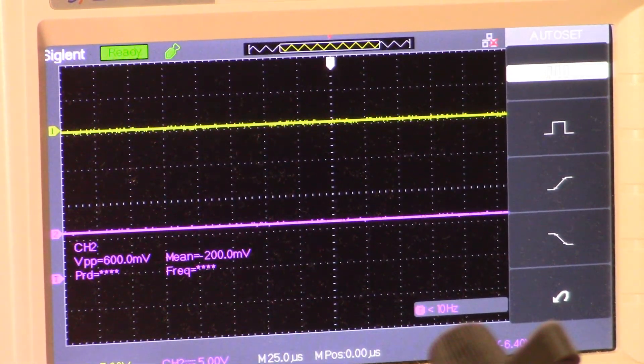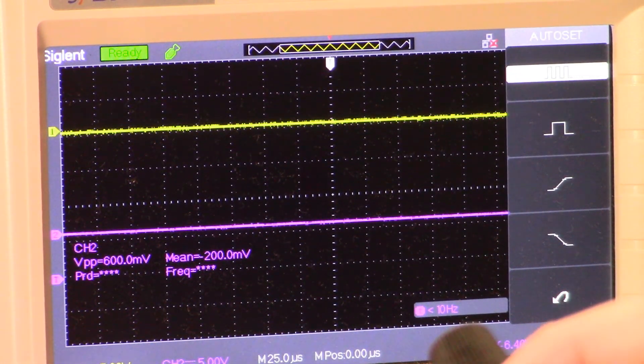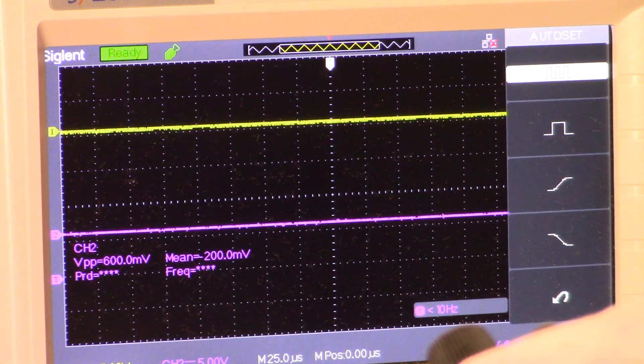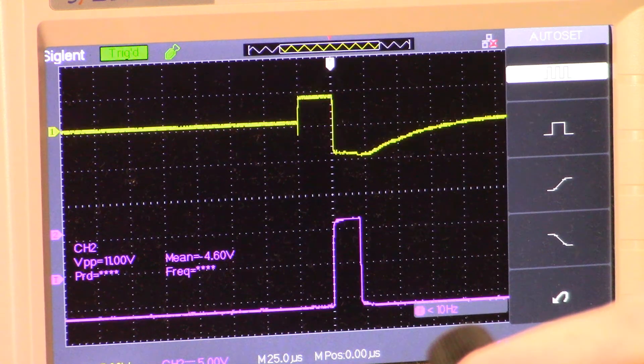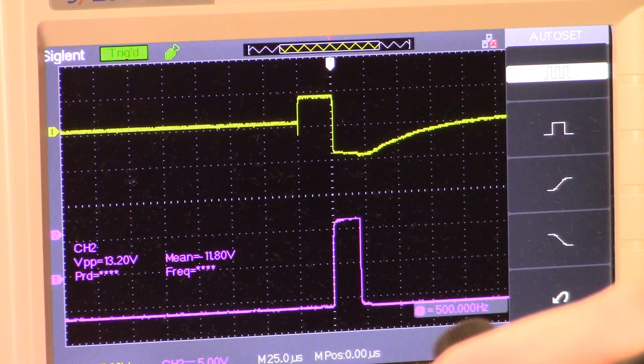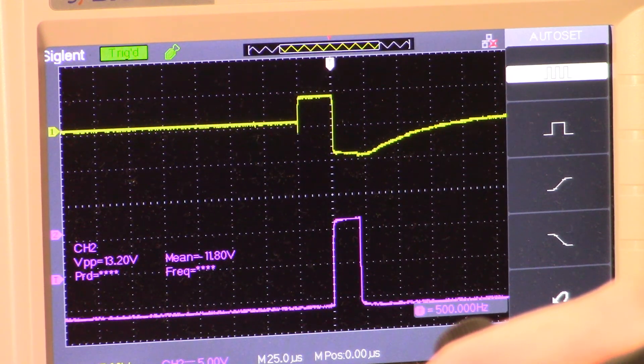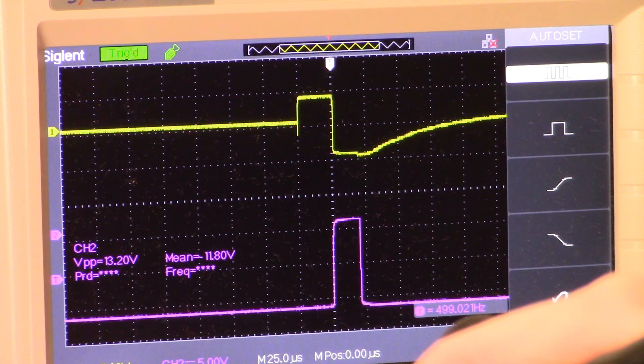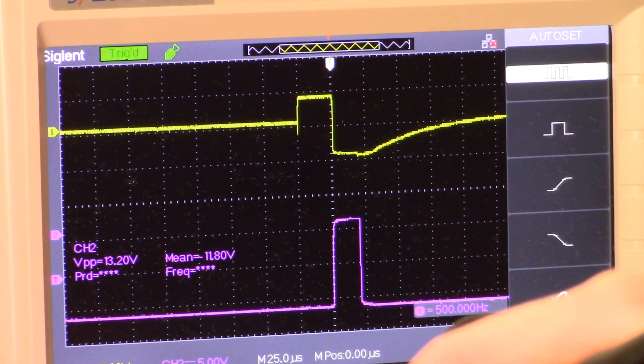All right, so I'm going to get on to the output of the preamp. There it is, and I'll show you the sample delay. Channel 1 is the preamp and channel 2 is the sample delay. It's about 21 and change microseconds. So that's what this portion of the circuit looks like.